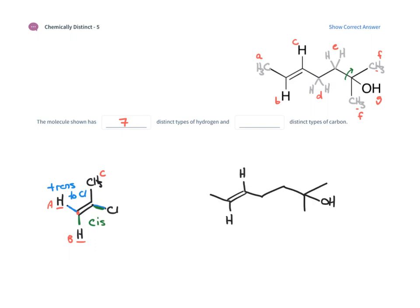Now let's count the carbons — I've redrawn a clean structure. Don't forget: every time you have a termination point, that is a carbon you have to account for. So the CH3 is carbon A. Then we have the two carbons of the double bond — one is B, one is C. They are distinct: B has a methyl group attached, C has a CH2 group attached — different environments. Next we have the CH2 carbon D, the CH2 carbon E. Then we have the quaternary carbon that we ignored before because it had no hydrogens — but for distinct carbon types that is type F. The two methyl groups are still equivalent, so those are G. So this molecule has seven distinct types of carbon.